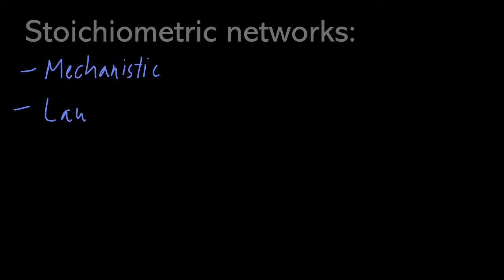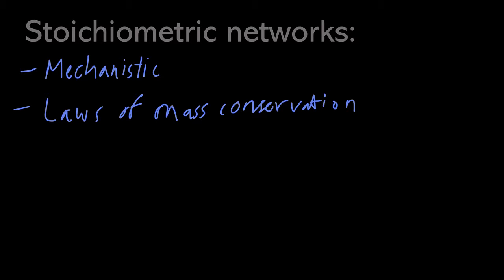All three of these types of networks can be represented in modeling as either stoichiometric networks or non-stoichiometric networks. We'll focus on stoichiometric networks which are mechanistic in nature, and as such they incorporate the laws of mass conservation. They also take into account kinetic data, so you could have kinetic rate laws represented.